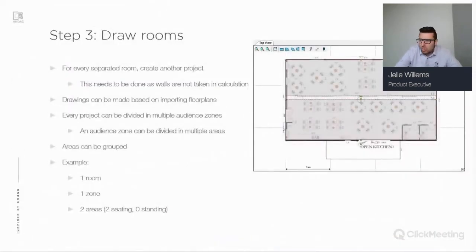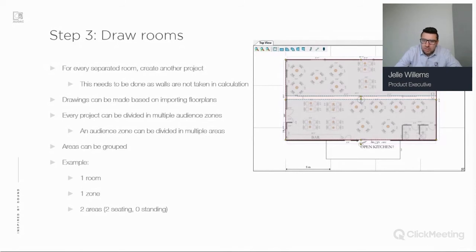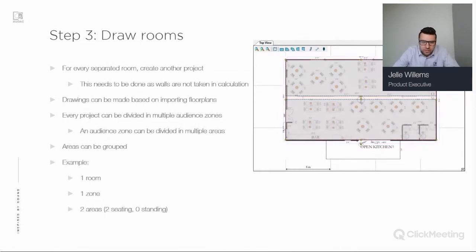The next step is to draw your rooms in EASE Focus. For every separate room, another project needs to be created, because walls are not taken into account in the calculations — it only gives you direct SPL, without reflections or room reverberations.